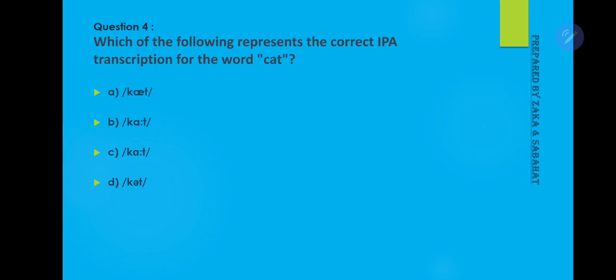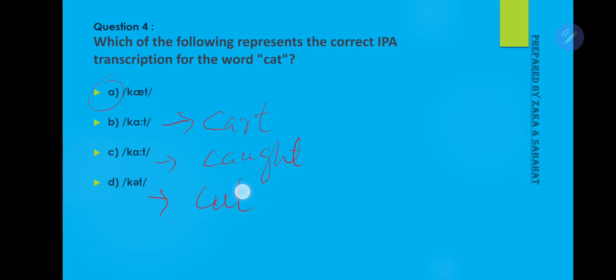Question 4: Which of the following represents the correct IPA transcription for the word 'cat'? The correct answer is A — 'cat'. The other options may represent words like 'caught' or represent non-standard transcriptions, and one represents the correct pronunciation for 'cut'.